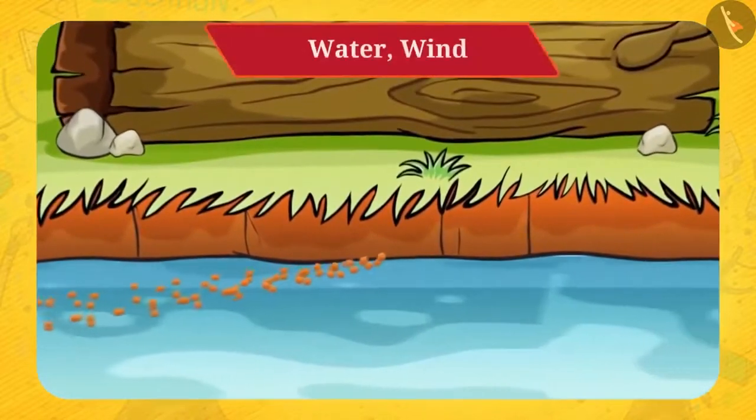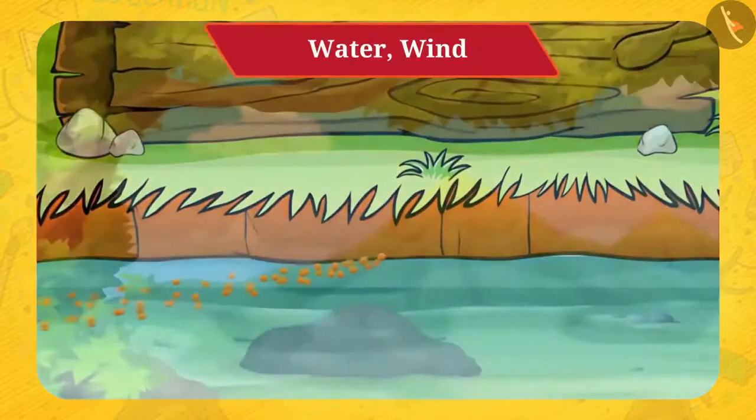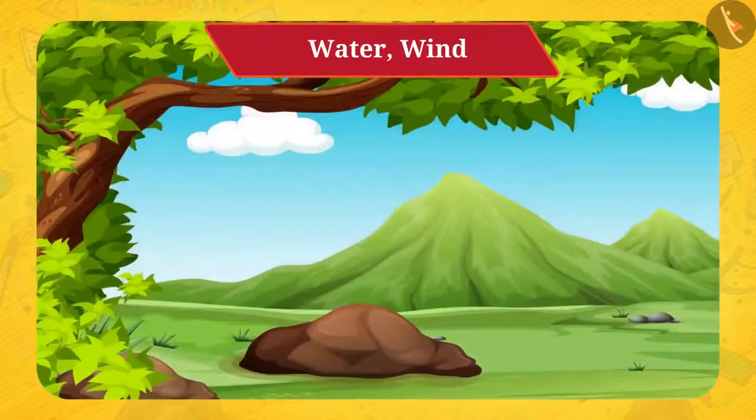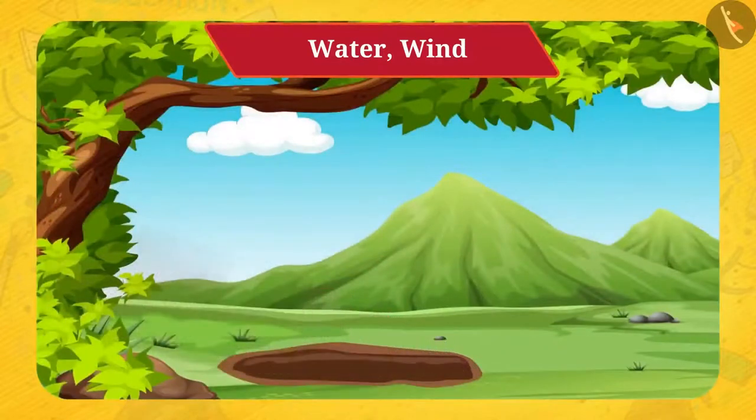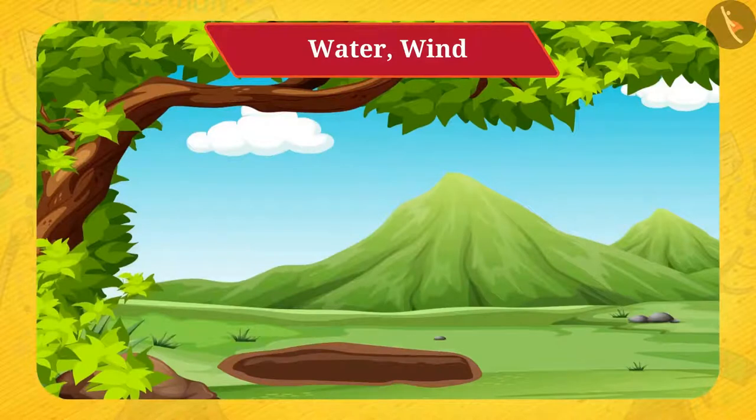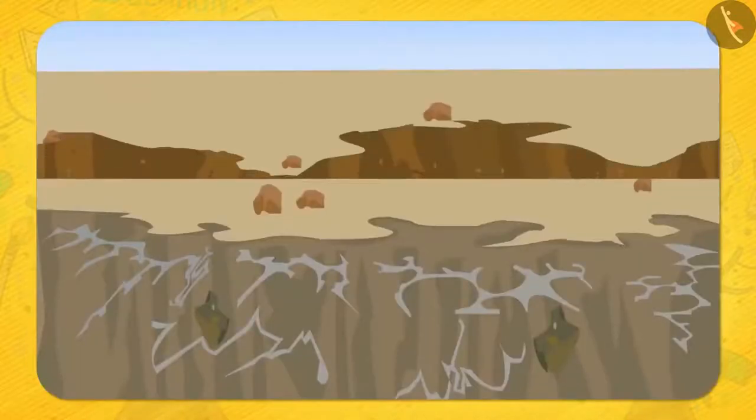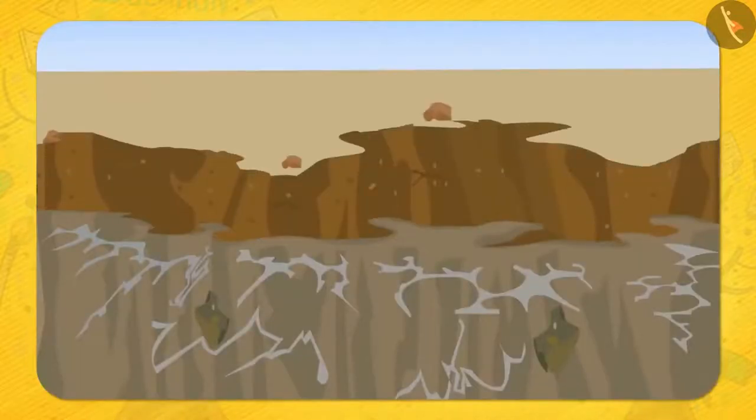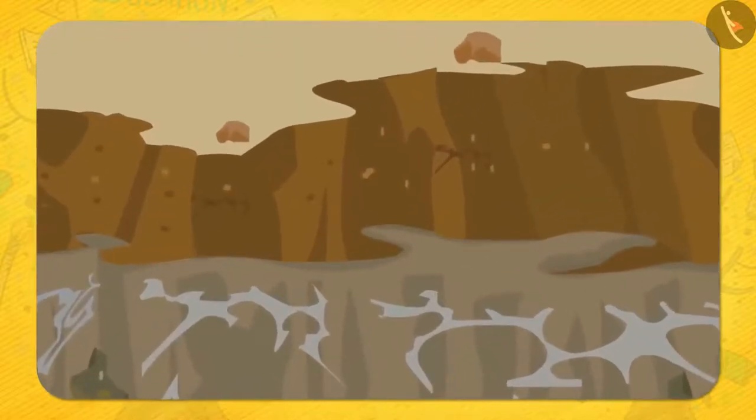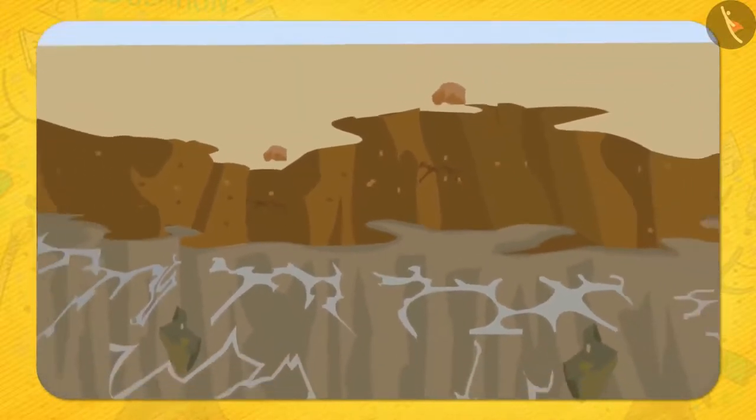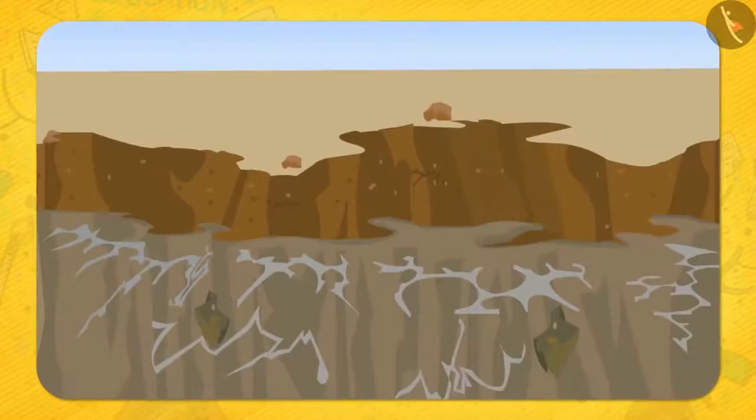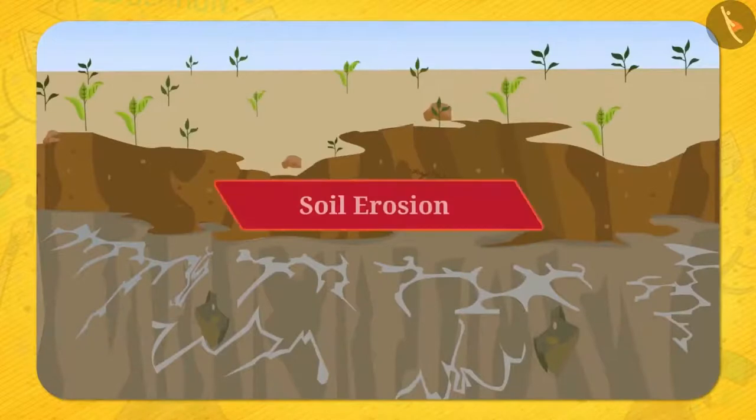But what if the soil gets blown away? So can you imagine what would happen? The rocky layer below the soil will be exposed and we will lose a valuable resource because very few plants grow in the rocky layer. Well friends, this is nothing but soil erosion. The main reason of soil erosion is deforestation.